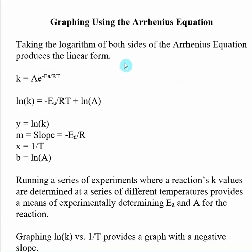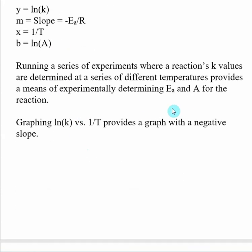This all starts with the actual Arrhenius equation. We've been using the integrated form, but here we can take the original basic idea and find the linear form of the Arrhenius equation. Y is going to be the natural log of our rate constant K values, slope is going to be negative energy of activation divided by the gas constant R, x is going to be one over temperature, and B is going to be the natural log of A, where A is a constant. We run a series of reactions, look at the different K values and different temperatures, then use a plot to find energy of activation.